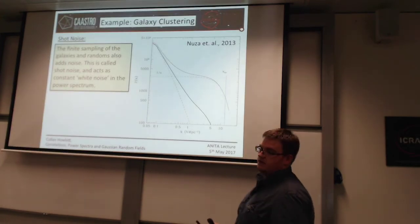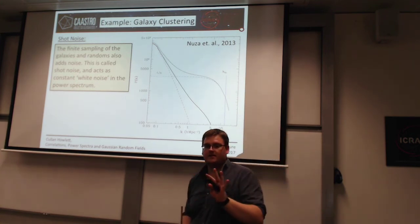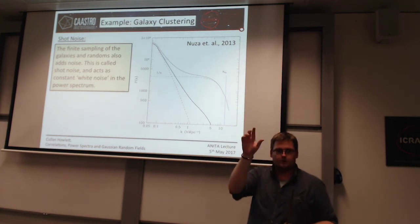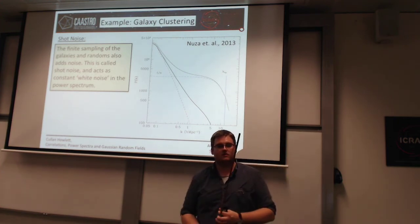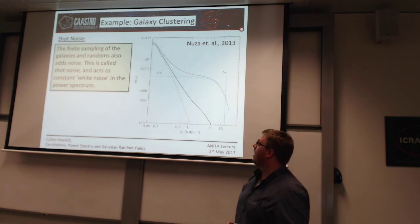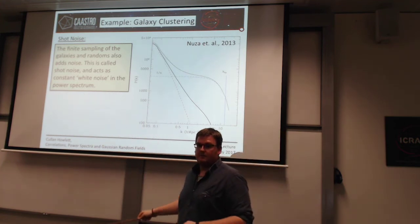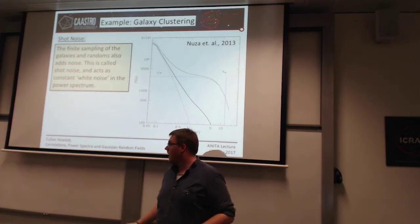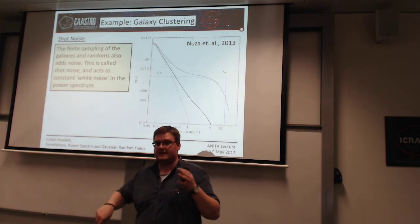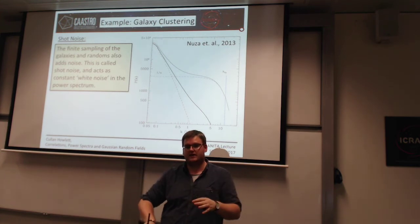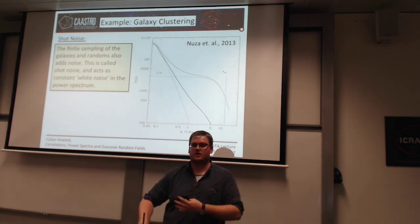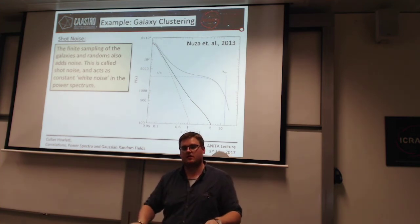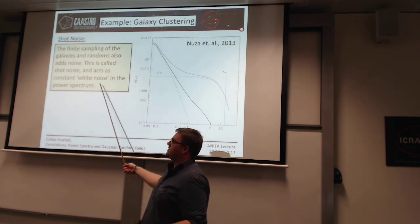Finally there is shot noise. This is due to the fact that you've got a finite sampling of your data — as opposed to finite sampling of the grid. So whereas before we had a grid with some width, now we also have data which isn't fully sampling the underlying distribution. When you propagate this through into a power spectrum, there's just a constant white noise — a flat constant power. In terms of galaxy catalogues, the shot noise comes from the fact that we can only measure some subsample of galaxies: the brightest, the reddest, the ones right in the center of their halos. So we haven't fully sampled the underlying distribution.